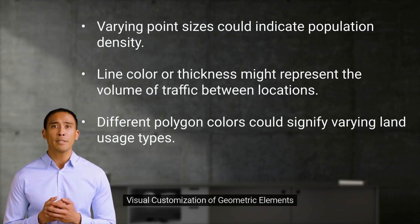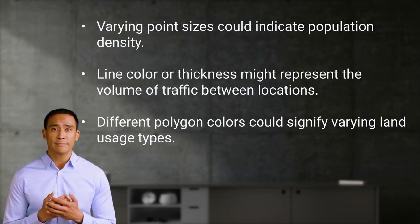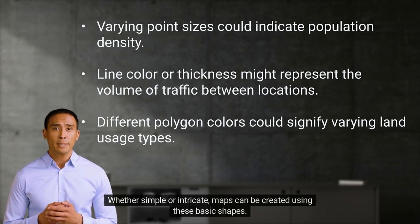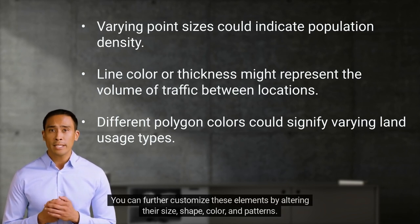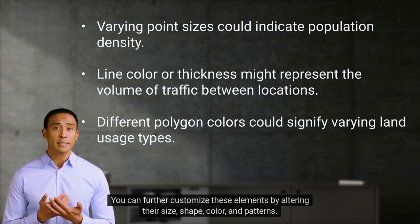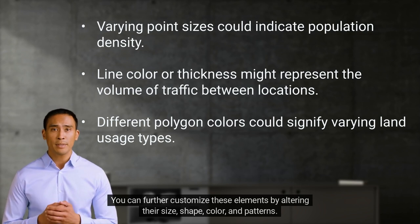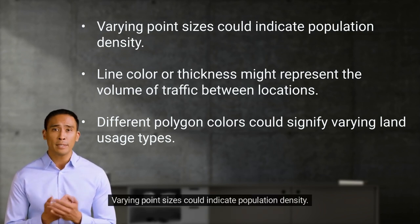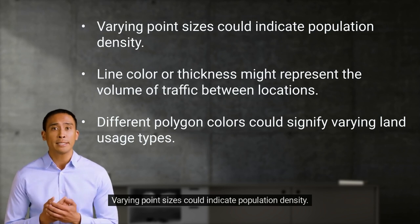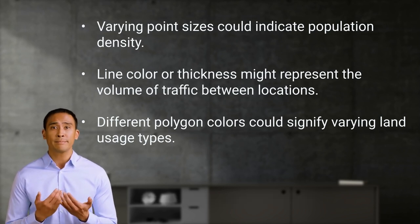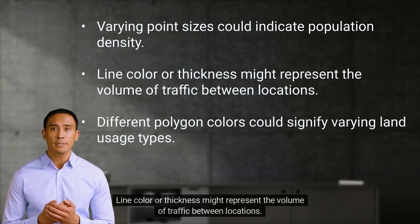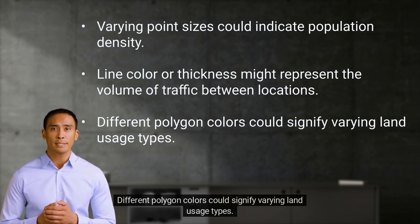Whether simple or intricate, maps can be created using these basic shapes. You can further customize these elements by altering their size, shape, color, and patterns. For example, varying point sizes could indicate population density. Line color or thickness might represent the volume of traffic between locations. Different polygon colors could signify varying land usage types.